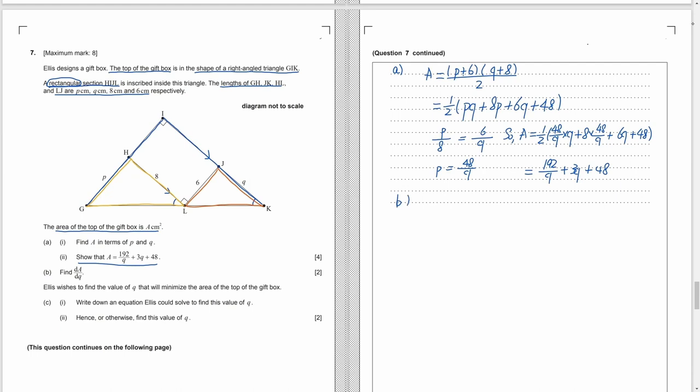Part B. Find dA over dQ. So we just need to differentiate the area by power rule. Put the index in front and subtract the index by 1. As 48 is a constant, it disappears. Part C. We want to minimize the area. So we set the derivative to 0: negative 192 over Q square plus 3 equals 0. And then we just solve this equation by algebraic skills or by calculator. We get Q equals 8.